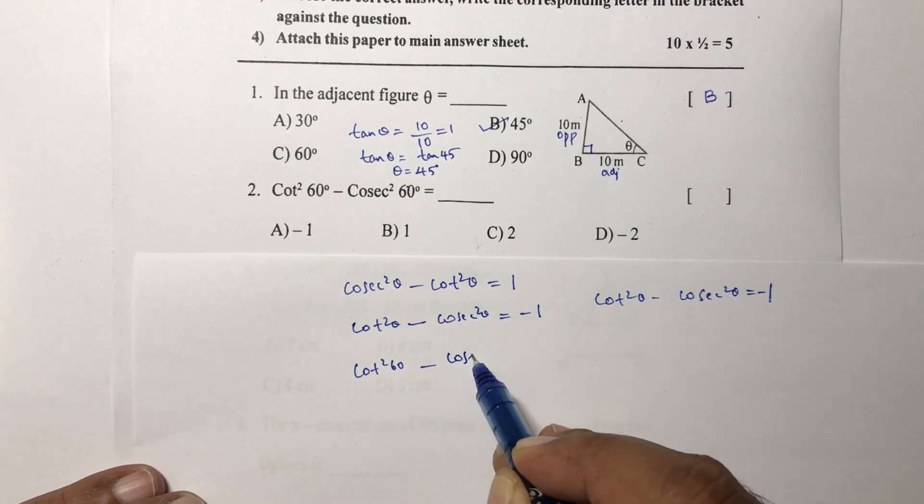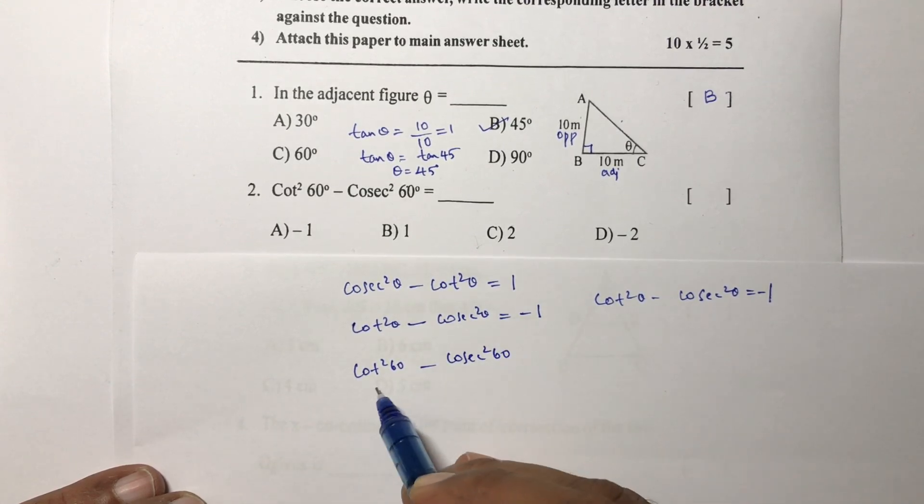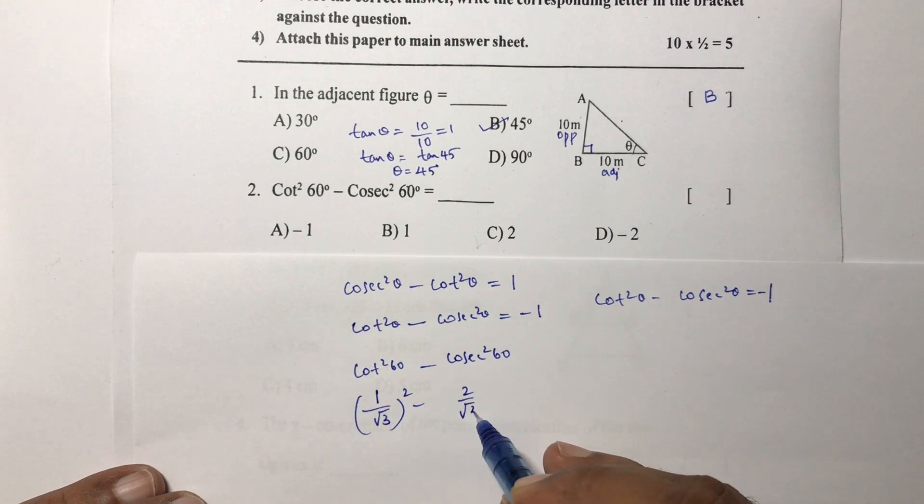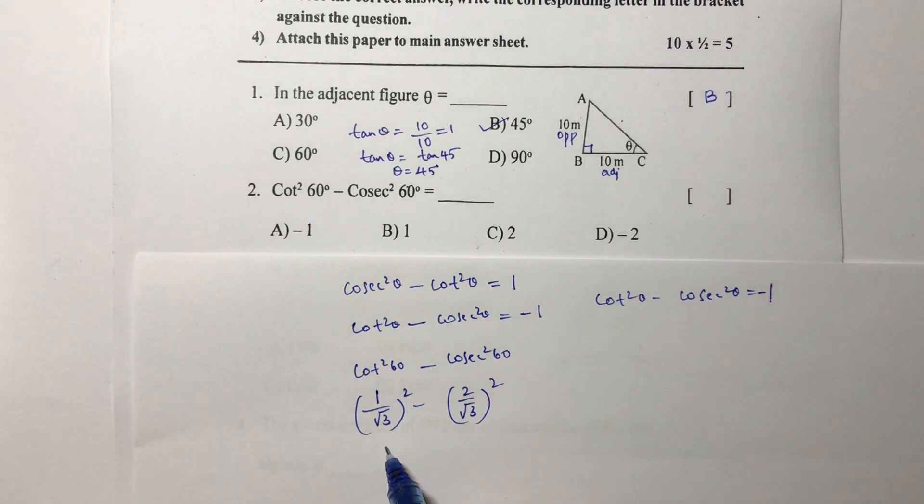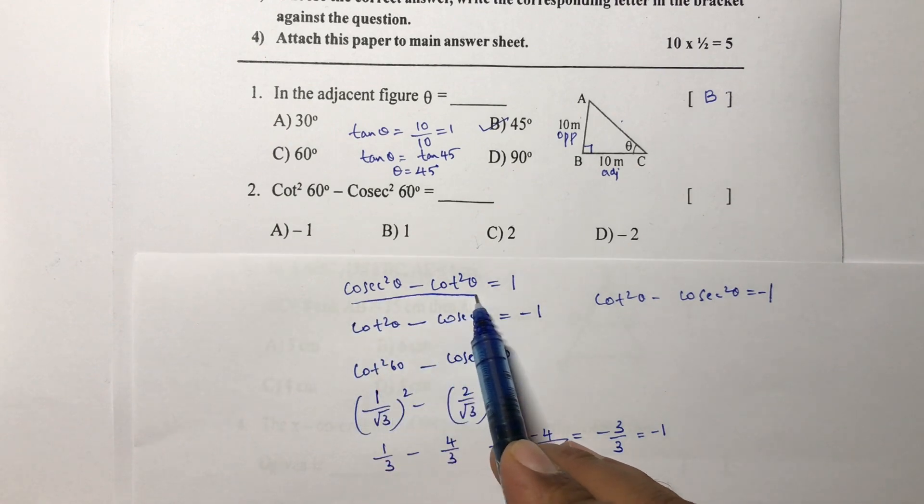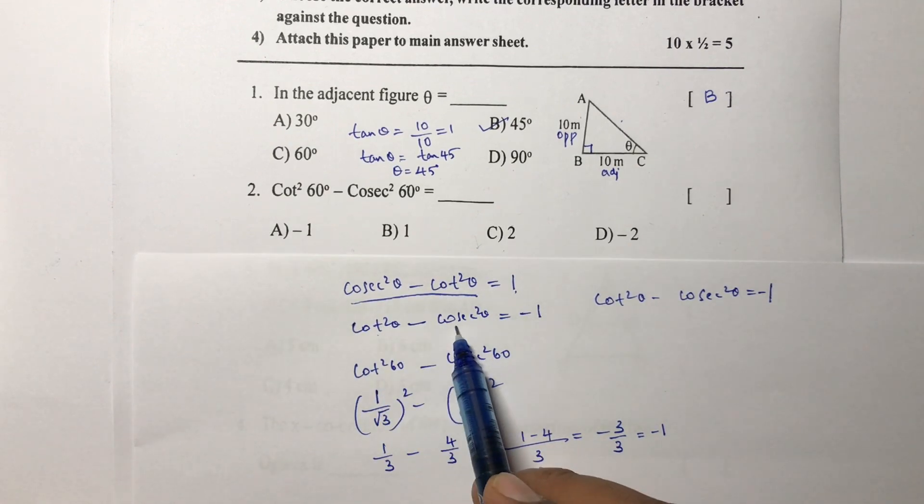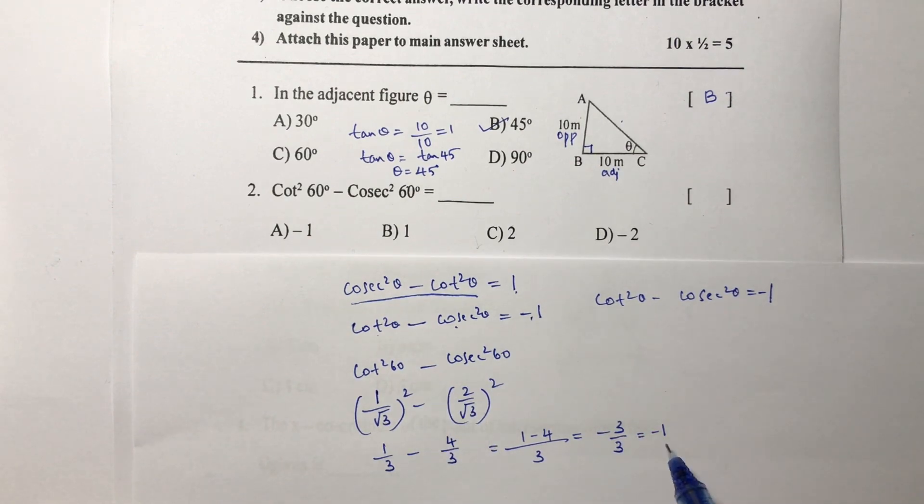Otherwise you can substitute the value cot 60 as the standard values. Cot 60 is 1 by root 3, cosec 60 is 2 by root 3. Here 1 by 3 minus 2 squared, 4 by 3, LCM is 3, 1 minus 4 equals minus 3 by 3, which is minus 1. The correct option is A.